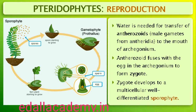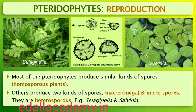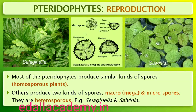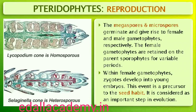The zygote thereafter produces a multicellular, well-differentiated sporophyte which is the dominant phase of the pteridophytes. In the majority of pteridophytes all the spores are of similar kinds — such plants are called homosporous. Selaginella and Salvinia, which produce two kinds of spores — macro (large) and micro (small) spores — are known as heterosporous. The megaspores and microspores germinate and give rise to female and male gametophytes respectively. The female gametophytes in these plants are retained on the parent sporophytes for variable periods. The development of the zygotes into young embryos takes place within the female gametophytes.